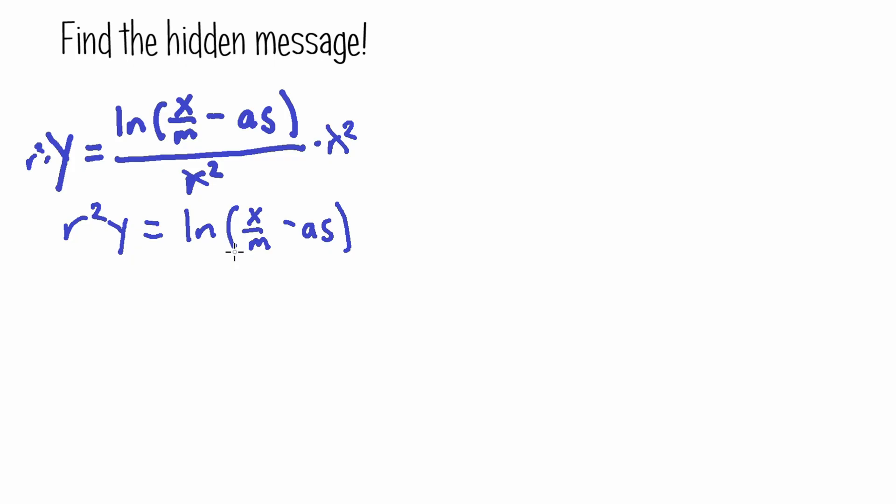So we're making this ln of x over m minus a s as the exponent and putting the base as e. We're going to do that, and remember, whatever you do to one side you have to do to the other side.